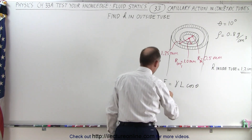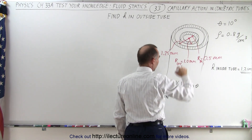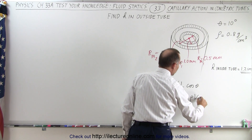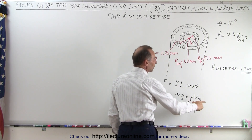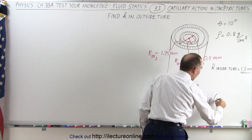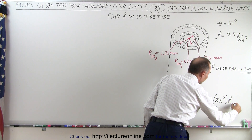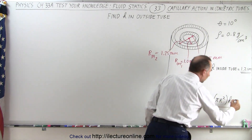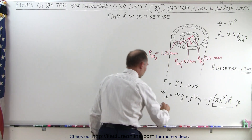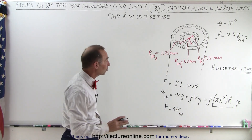The weight of the liquid in the inside tube equals m times g, which equals rho times v times g. The volume is the area of the base times the height, so that is density times pi r squared times h — the volume of liquid in the inside tube — times g. At equilibrium, the force equals the weight of the liquid inside.